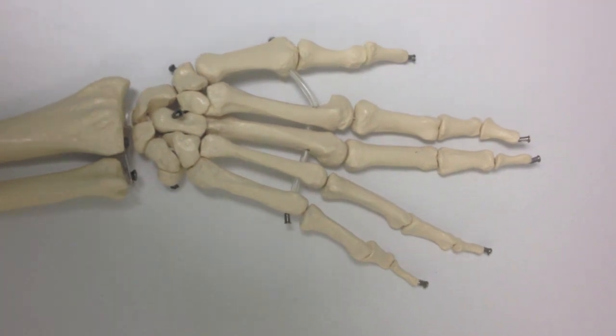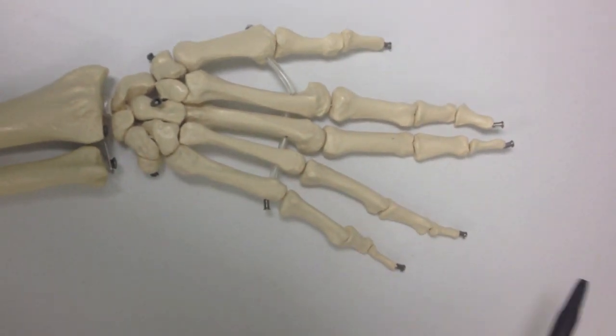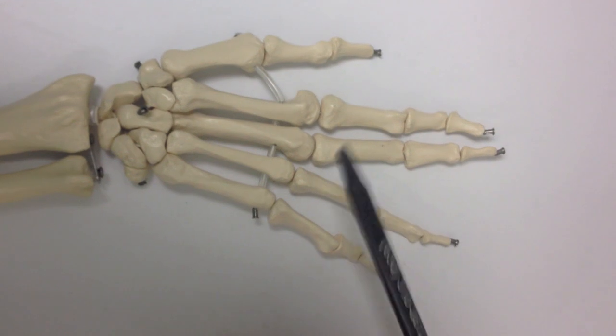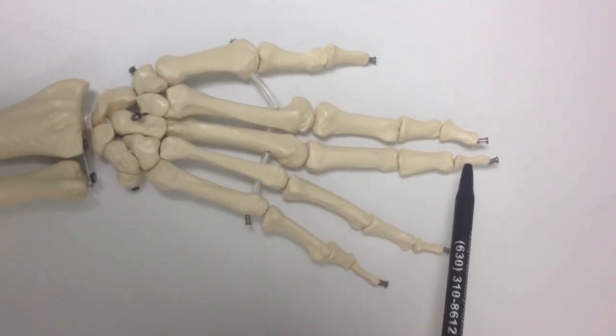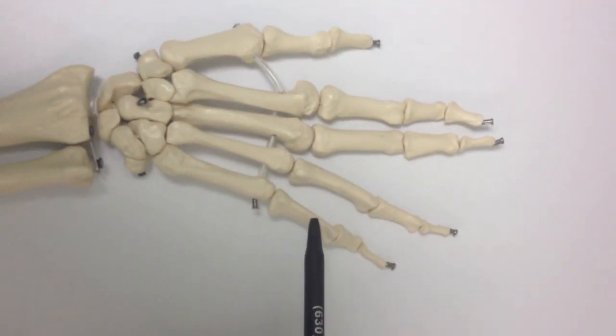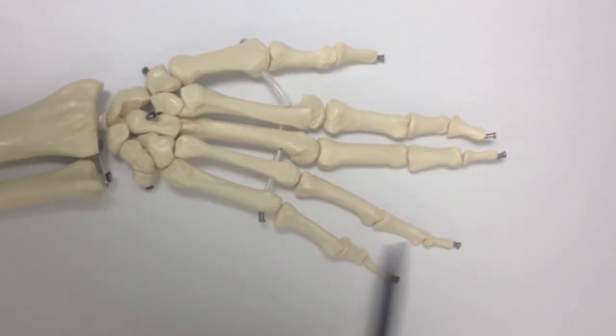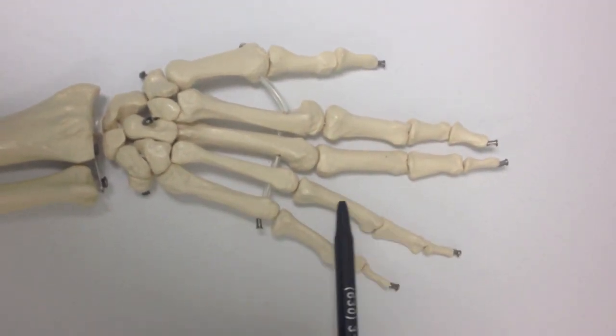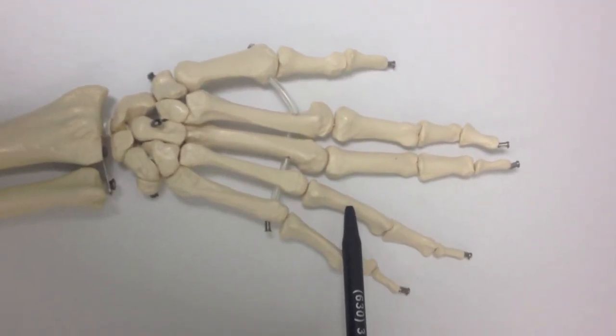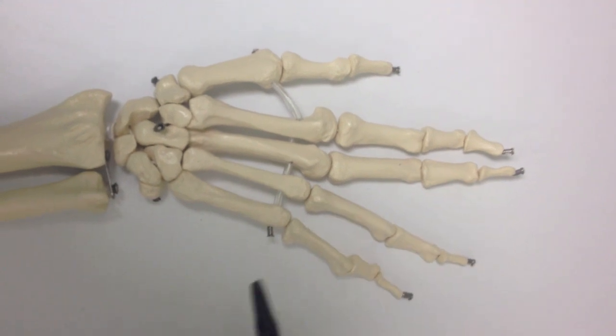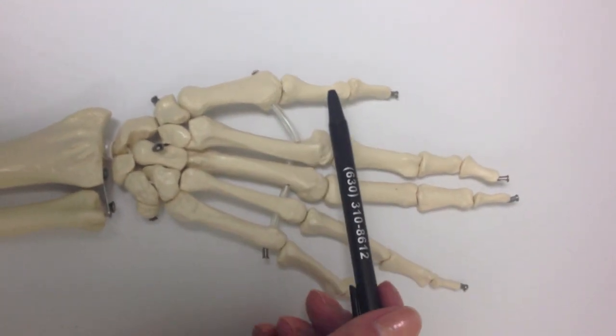Here is the hand and we'll start with the most distal portion, these are the phalanges, basically what makes up your fingers. There is a distal, a middle, and a proximal phalanx in each finger. The thumb only has a proximal and a distal.